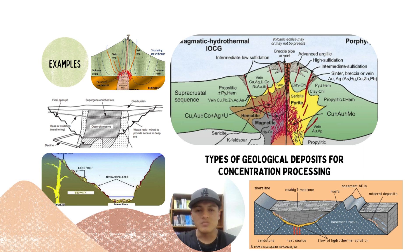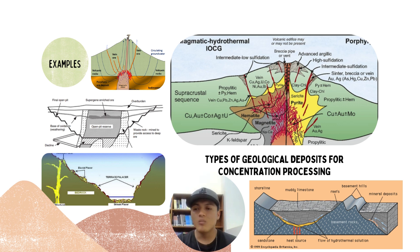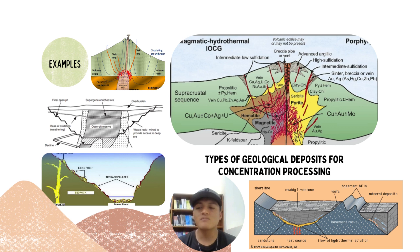Types of geological deposits for concentration processing — this section is divided into 5 parts. The first is hydrothermal mineral deposits. These deposits are formed when minerals are deposited and concentrated from hot waters that are superheated by molten magma and rise to the earth's surface. The second deposit relates to cut-off grade, which refers to the minimum concentration that an element must have in a deposit to be economically exploitable. These deposits are characterized by having an ore concentration high enough to make extraction profitable.